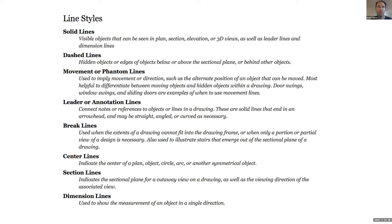Then we have phantom lines or movement lines — showing where something has moved from or how it's being moved. That could be a door swing or a window swing. Leader and annotation lines are like dimension lines — a different style and thickness telling us a particular dimension, though that's not something we'll do specifically in this class.